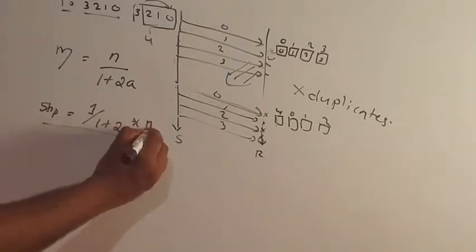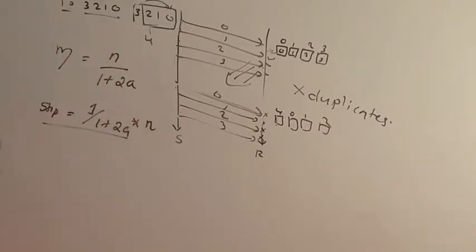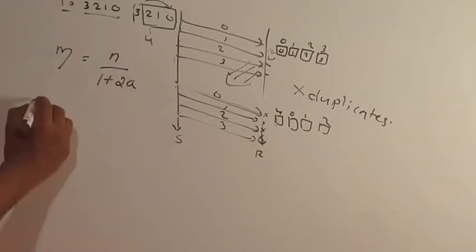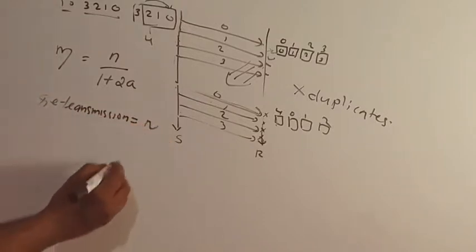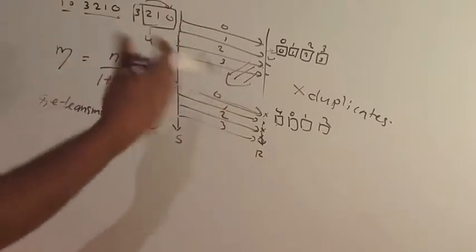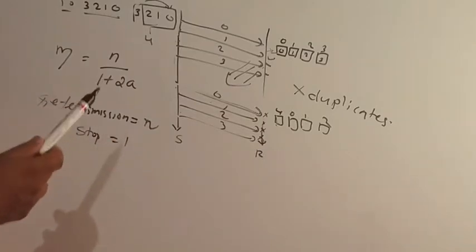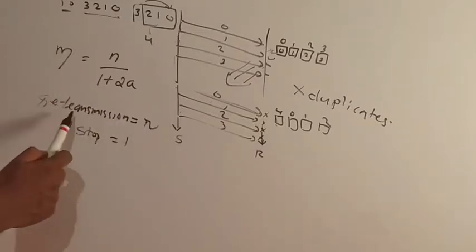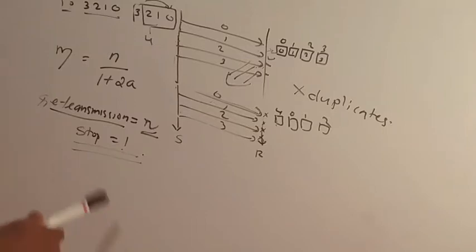Now, the efficiency calculation is n divided by 1 plus 2a. That means the window size n is used in the same way. Then these new values are OK. Thank you.